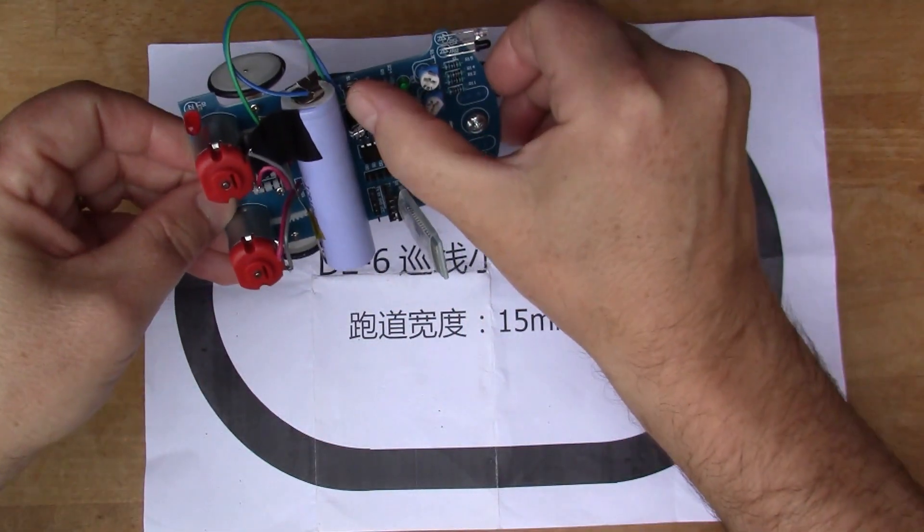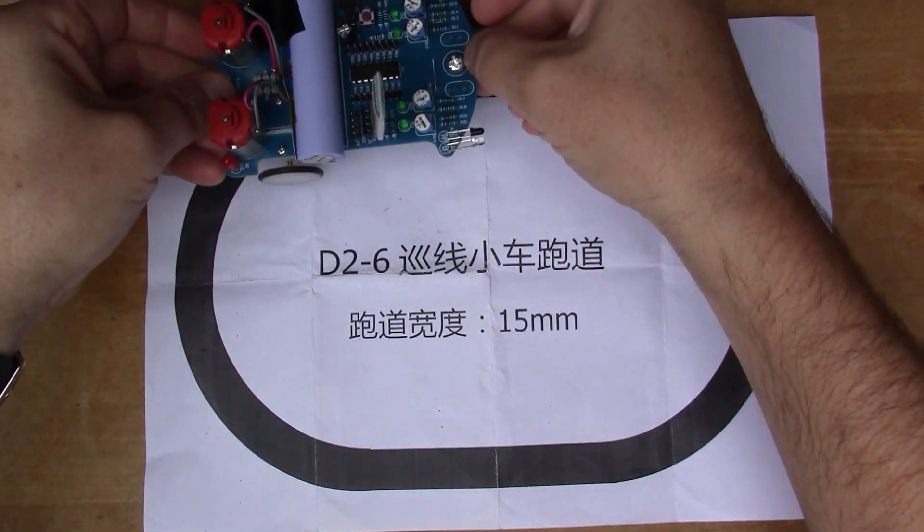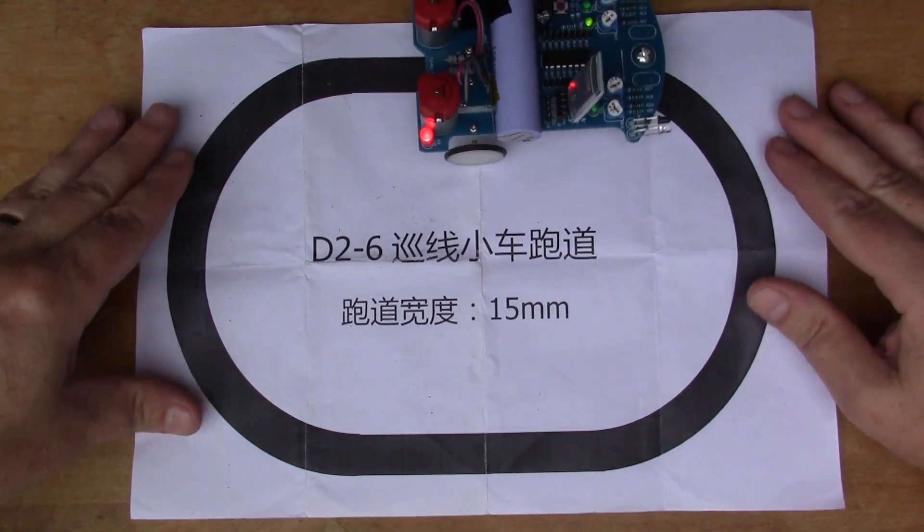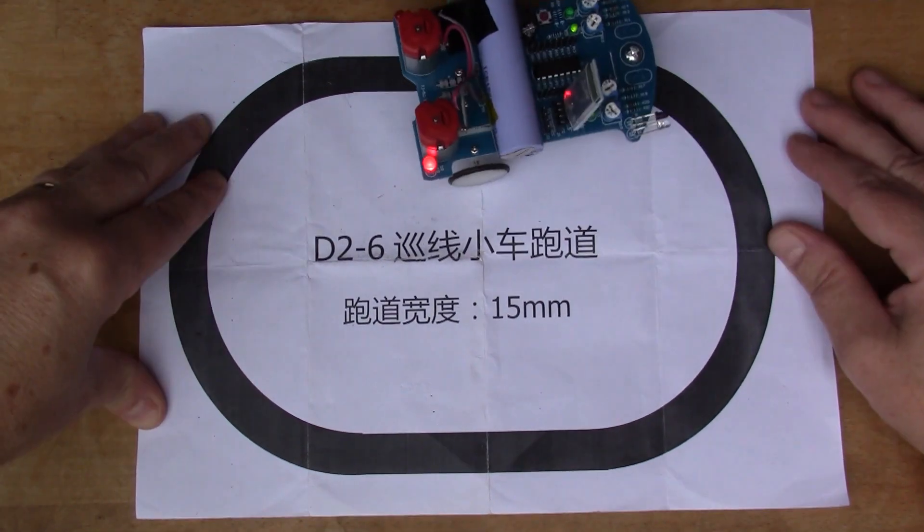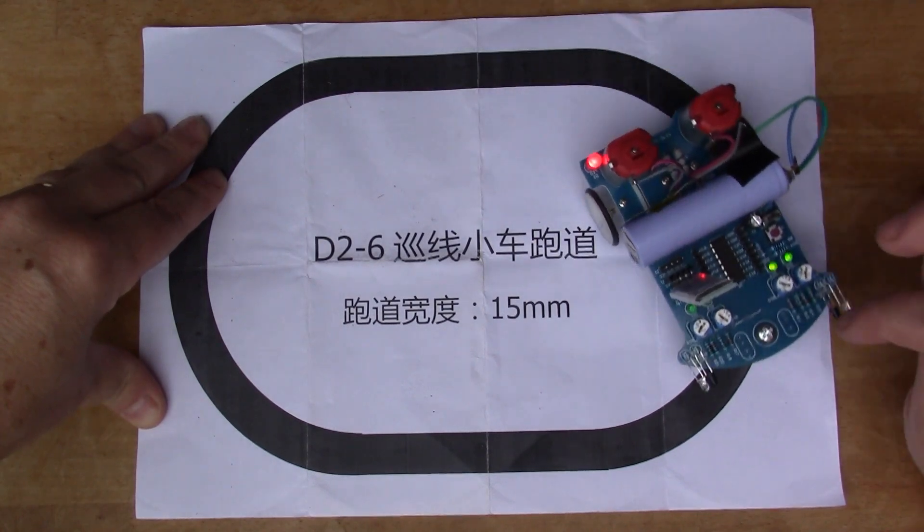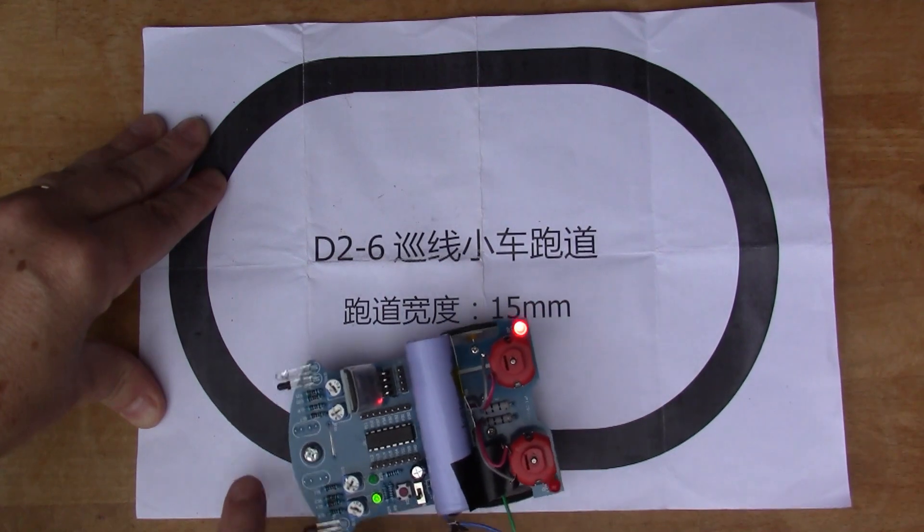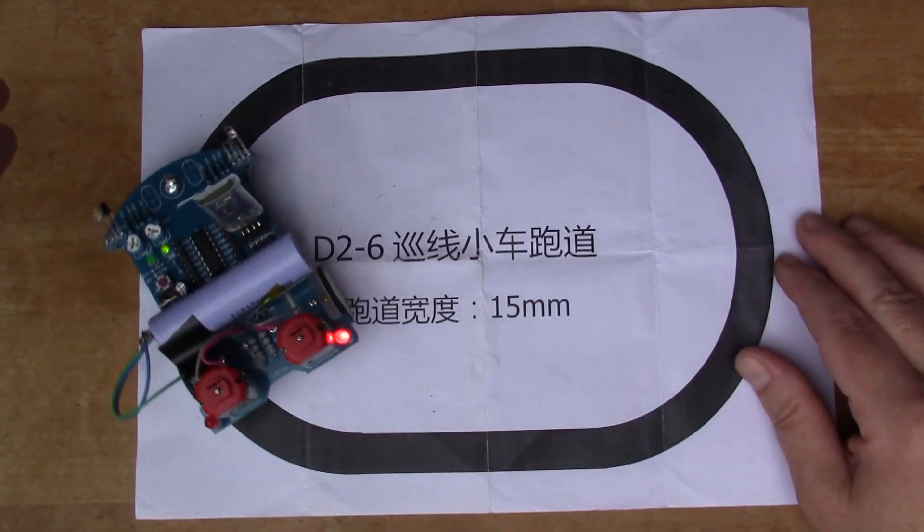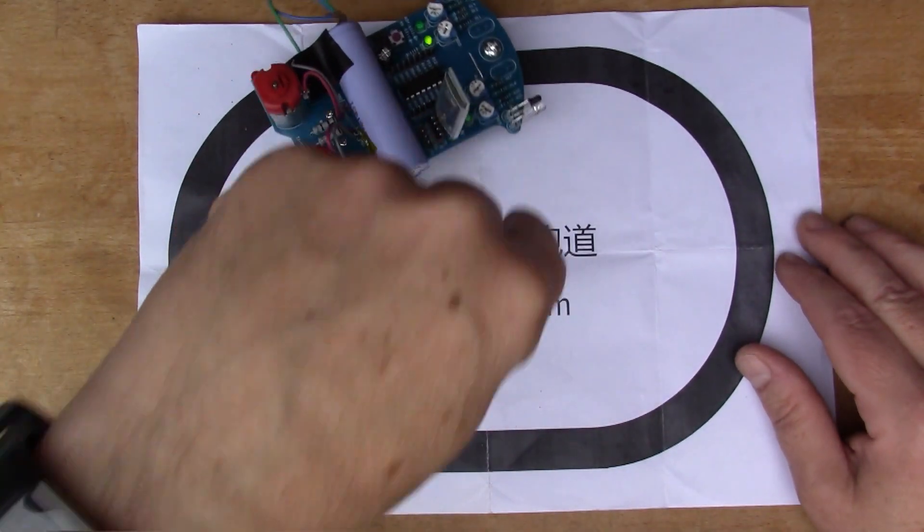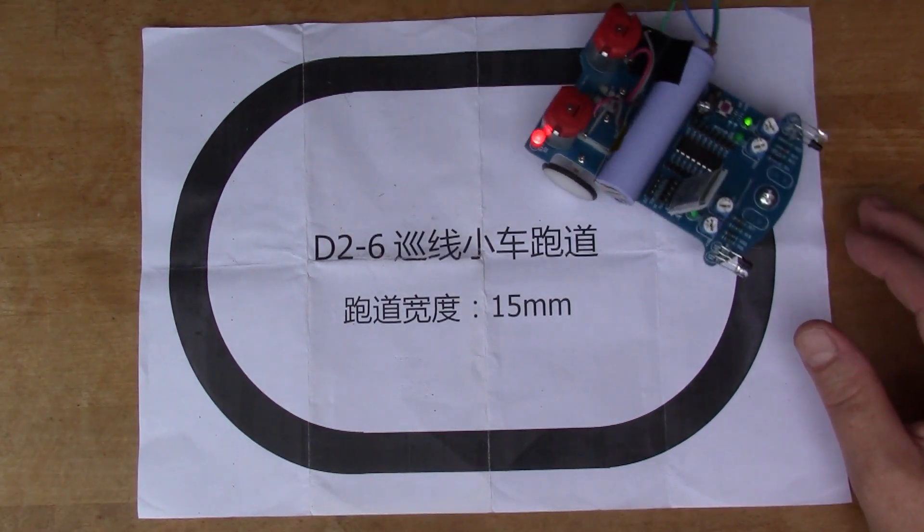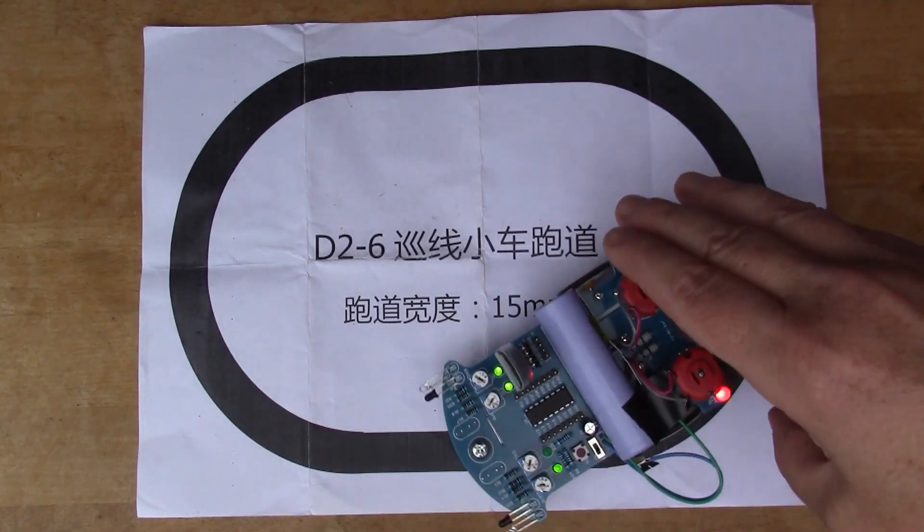Let's give this a go, do the line follower. There we go, that's not bad is it? It's hunting for the black line, seeing the difference between the white and the black using the photodiode underneath.